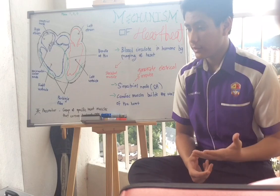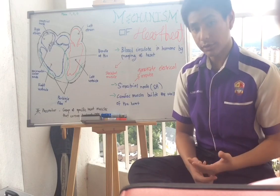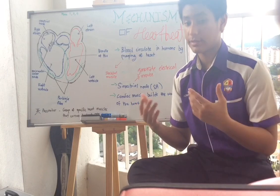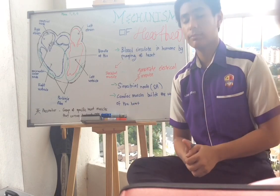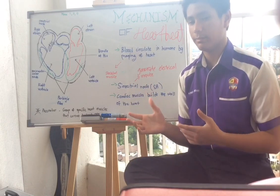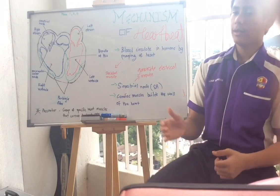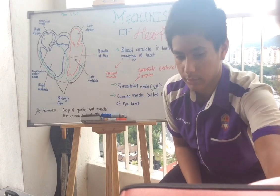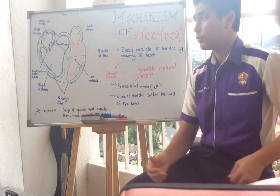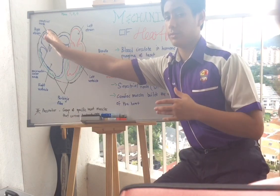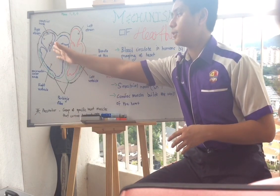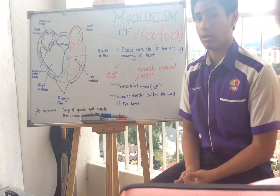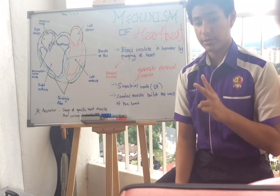Atria is the plural of atrium, and they contract simultaneously. The contraction of the atria pumps blood from the atria to the ventricles. The electrical impulse then reaches the atrioventricular node — it travels from the sinoatrial node to the atrioventricular node, which is connected to the bundle of His.